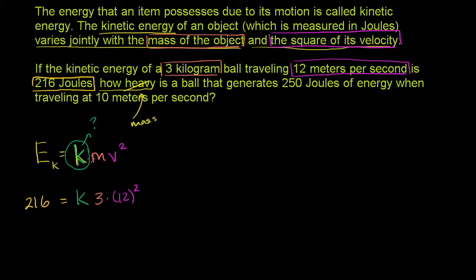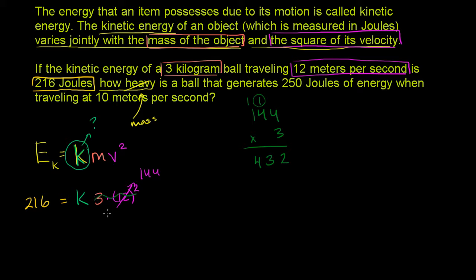Now we know everything else in the equation and can solve for k. The units do work out: 216 joules equals kilograms times meters squared per second squared, so you get joules on both sides, and k is unitless. So: 3 times 12 squared — 12 squared is 144, and 3 times 144 is 432. So we have 432 times k equals 216.